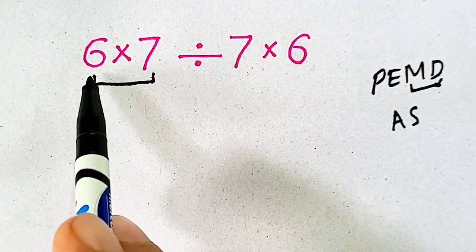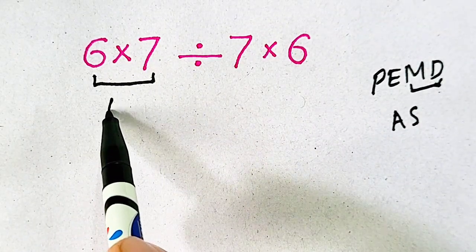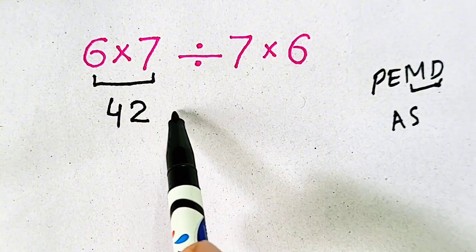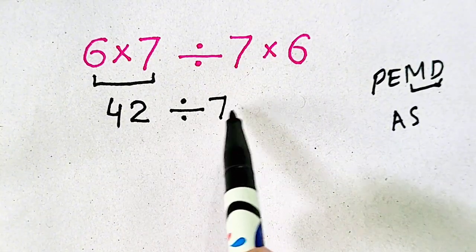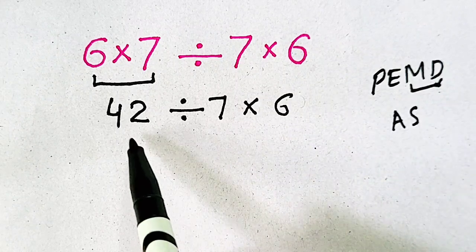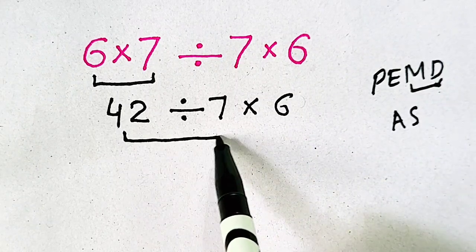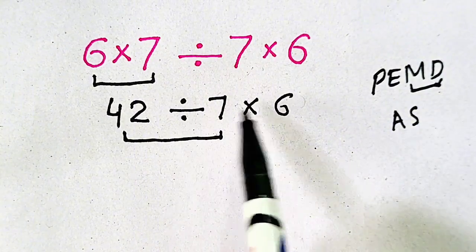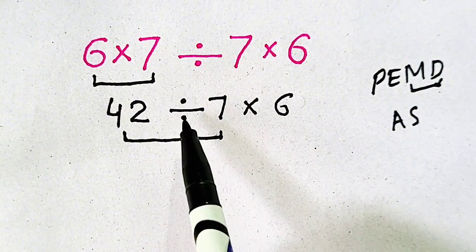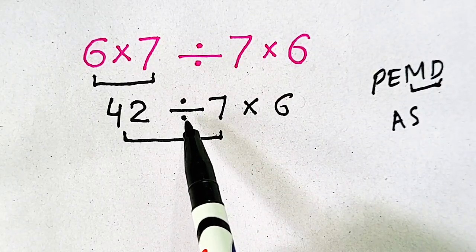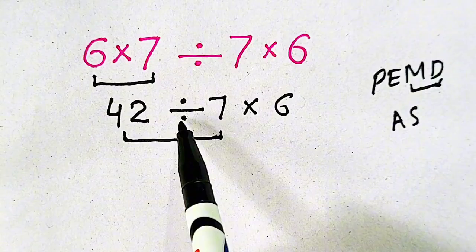So if we multiply 6 and 7, we will get 42 divided by 7 times 6. Now we have to move from left to right according to PEMDAS, because division and multiplication both are involved. But we have to divide first.